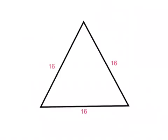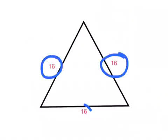So here is our triangle. Every side of the triangle is 16 inches. To find the perimeter, we have to add all the sides.